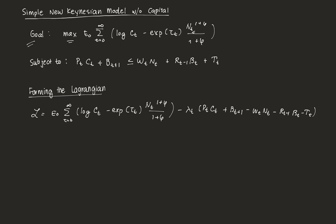In our lifetime utility function, we have C_T, which represents current consumption. We also have TAU_T, which represents a shock to preferences. Then we have N_T, which corresponds to labor hours. Then we have var_phi, which is the elasticity of labor.